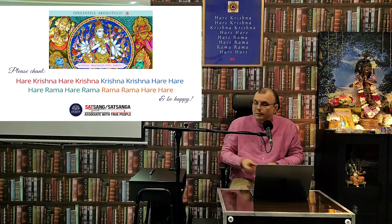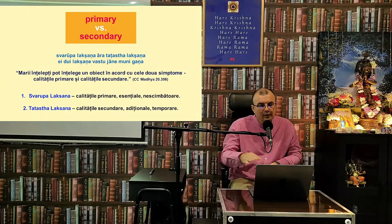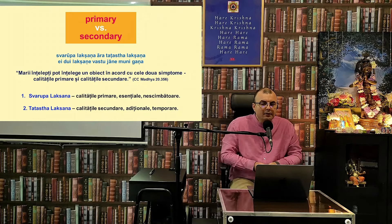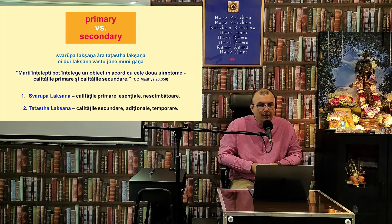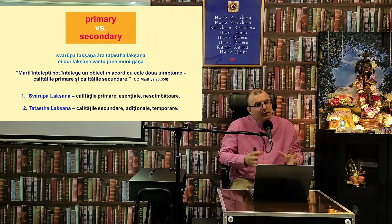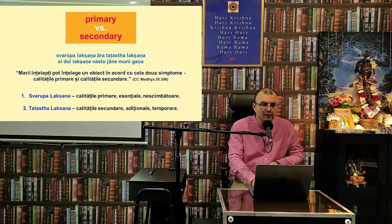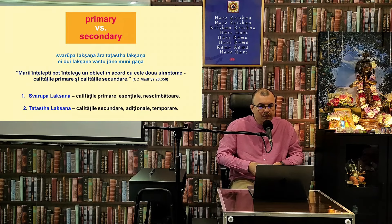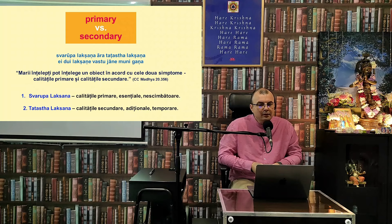Scriptura Vedică vorbește despre faptul că orice obiect în această lume posedă două calități. Faimosul verset spune: Svarupa Lakshana, Tatasta Lakshana. Marii înțelepți pot înțelege un obiect în acord cu cele două simptome: calitățile primare, Svarupa Lakshana, și calitățile secundare, Tatasta Lakshana. Svarupa Lakshana înseamnă calitățile primare, esențiale, neschimbătoare ale unui obiect, prezente constant, întotdeauna, în toate locurile și în toate circumstanțele.